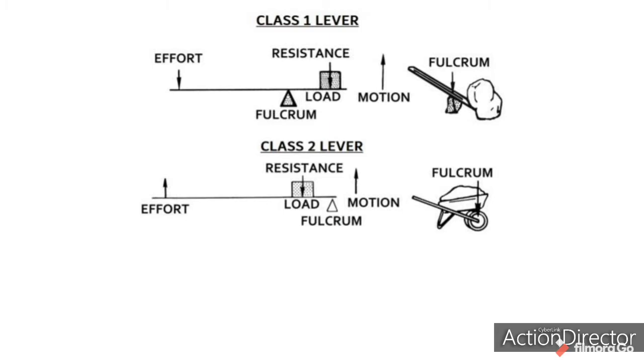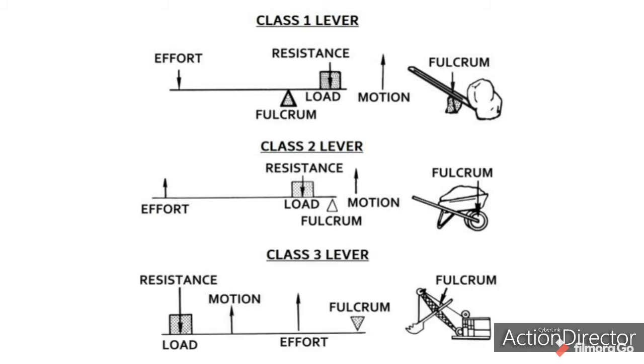A class 2 lever has the fulcrum placed at the end of the rigid beam on the other side of the load. The effort is pulled upwards. A class 3 lever has the fulcrum placed above the end of the beam. The load is at the start of the beam and the effort is pulled upwards from the middle.